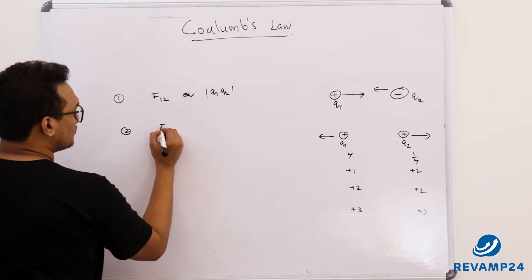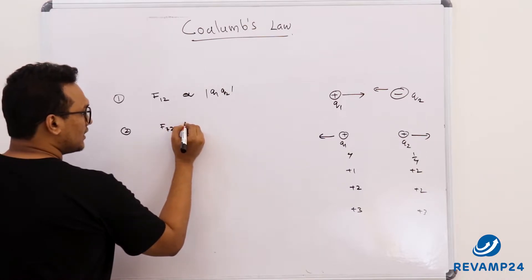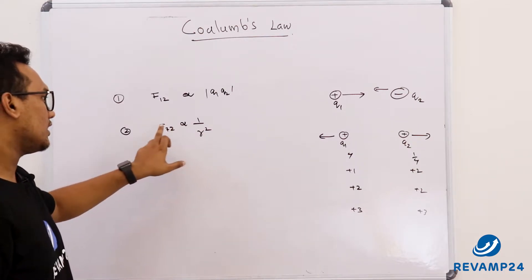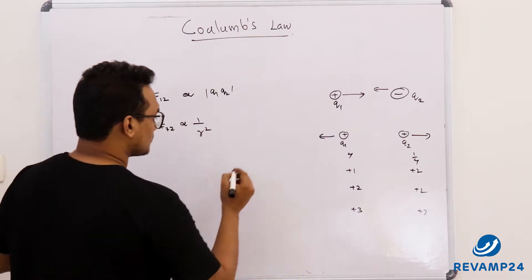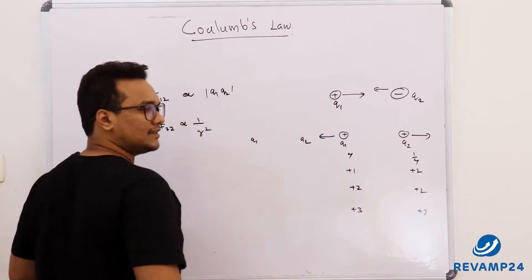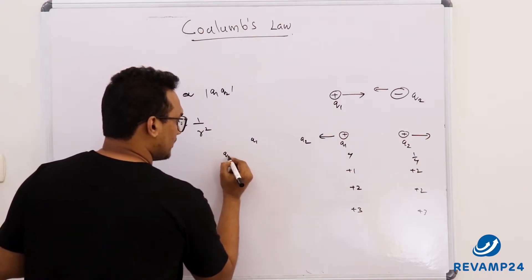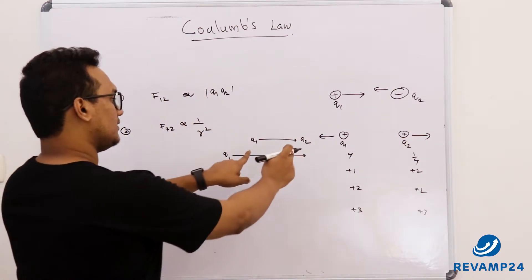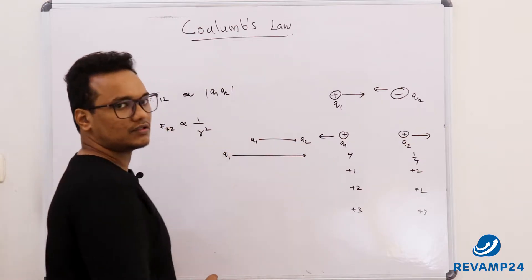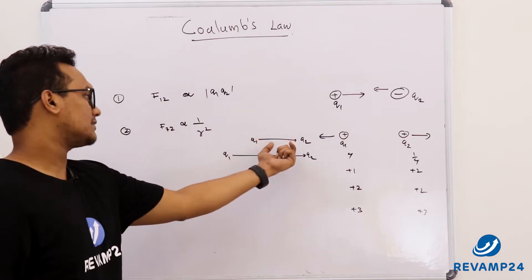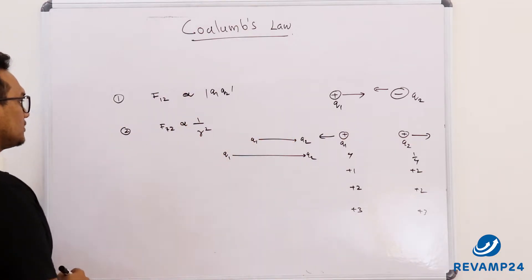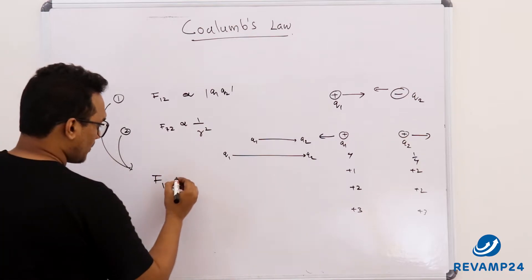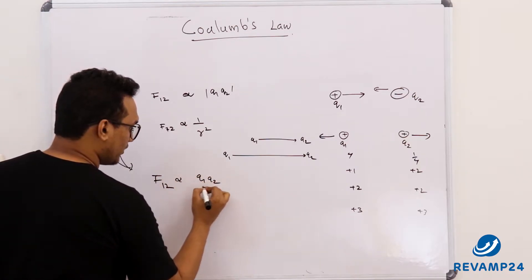The second statement is: force between two charges is inversely proportional to the square of the distance between them — this is called the inverse square law. As distance reduces, force increases. Combining both statements, force between charges 1 and 2 is directly proportional to q1·q2 divided by r².